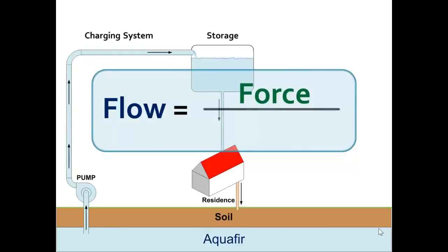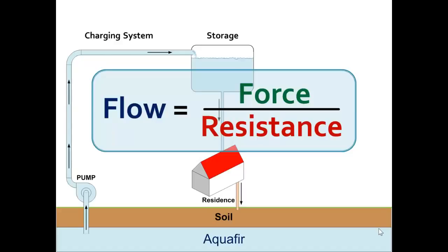If we put force, flow, and resistance in another form: flow equals force divided by resistance. If force increases, flow increases. If resistance increases, flow decreases. Force and flow are directly proportional — more force, more flow. Flow and resistance are inversely proportional — the more resistance, the less the flow. That's why force is placed above the line and resistance below the line in the formula.